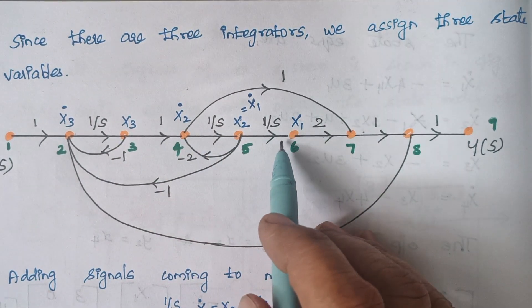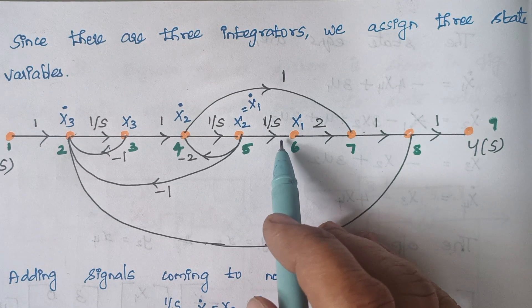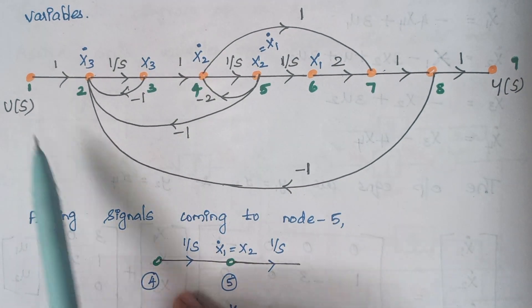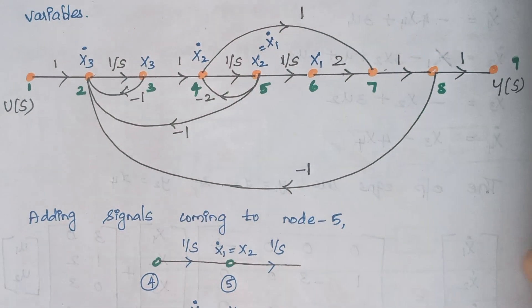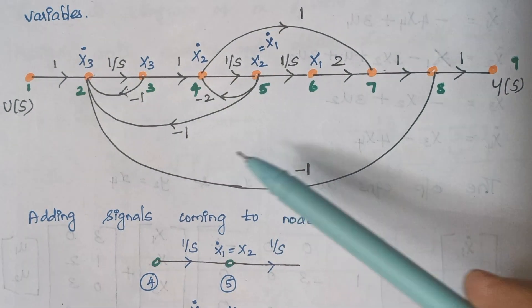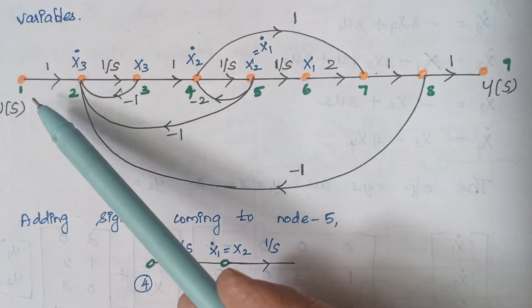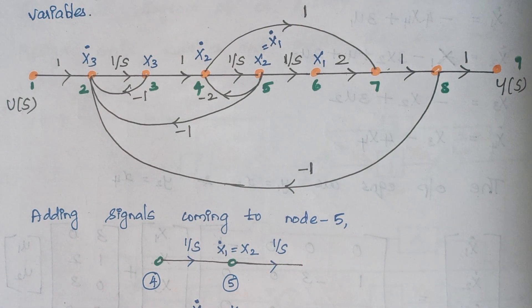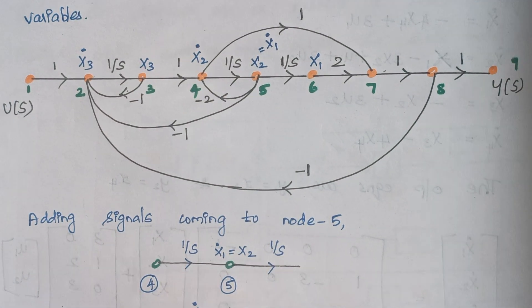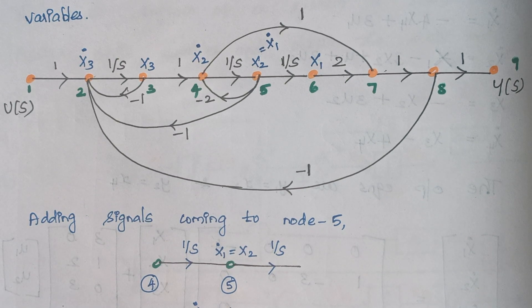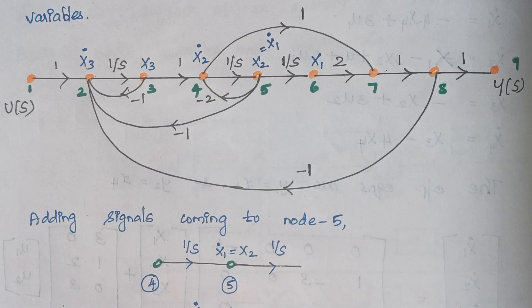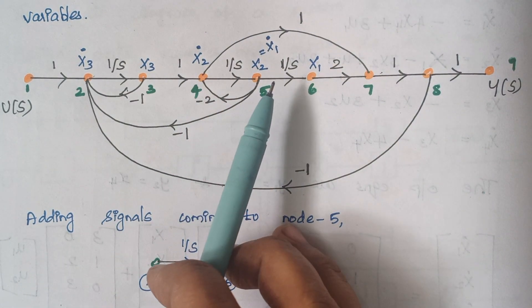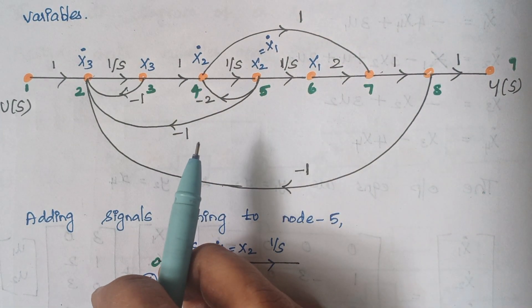Therefore, we assign three state variables. U(S) is the input and Y(S) is the output. For convenience, we are numbering the nodes — totally we are having nodes from 1 to 9. The first step is to assign the state variables. Since we are having three integrators, we should have three state variables.